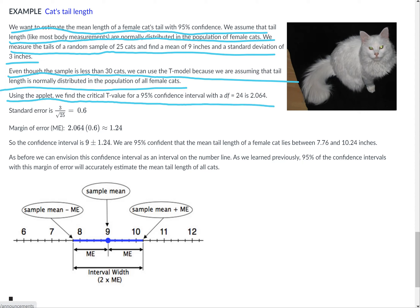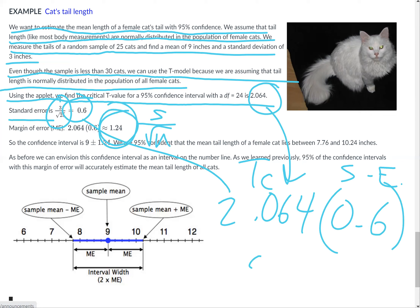Using the applet, we find the critical t-value for a 95% confidence interval with degrees of freedom of 24 is 2.064. The standard error is s over the square root of n. s is 3, n is 25, so 3 over the square root of 25 is about 0.6. The margin of error is 2.064 times 0.6, about 1.24.